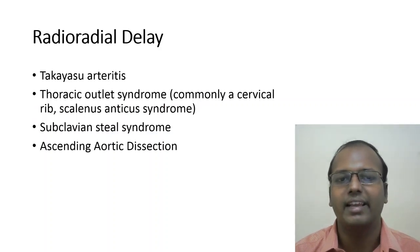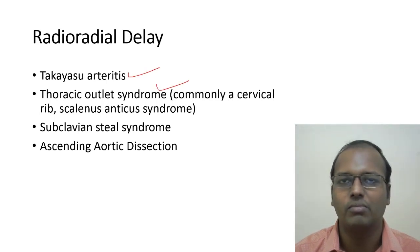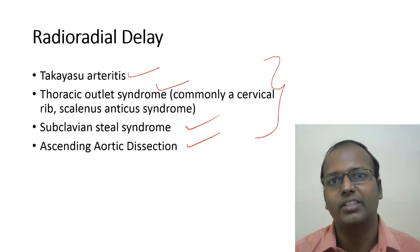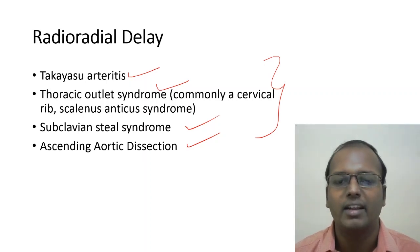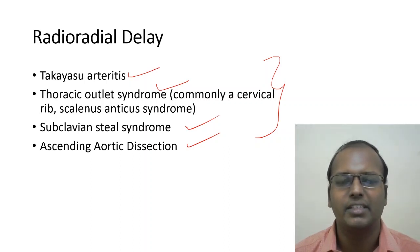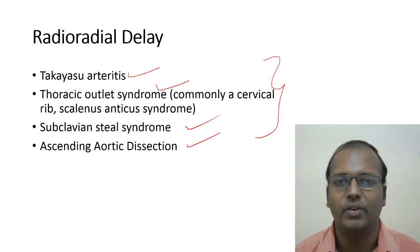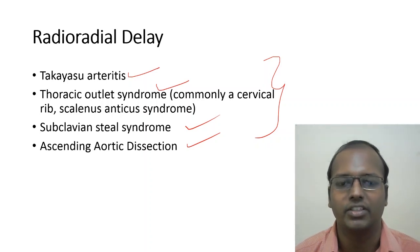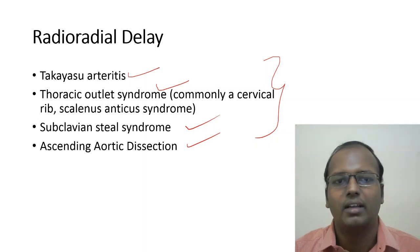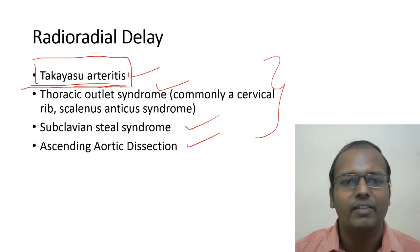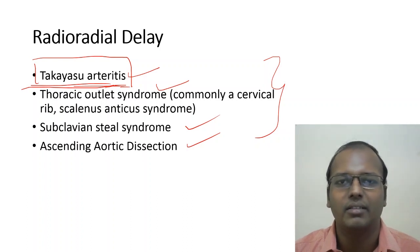Radio-radial delay can occur in Takayasu's arteritis, thoracic outlet syndrome, subclavian steal syndrome, and ascending aortic dissection. A discrepancy in blood pressure between the two upper limbs of more than 10 mmHg is significant and can suggest dissection. In acute chest pain patients, always check both radial pulses — dissection can mimic myocardial infarction, especially inferior MI ECG changes.